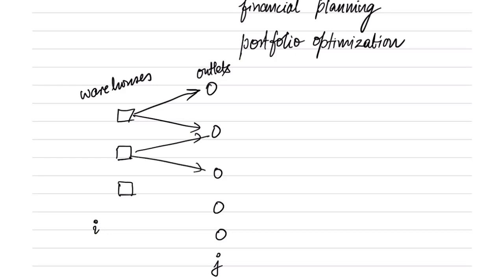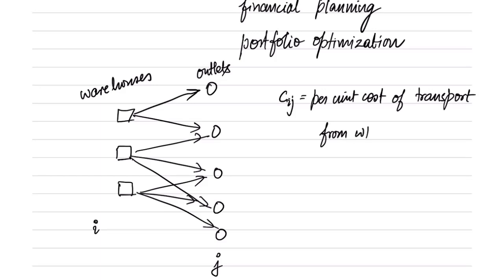Each warehouse may send to some of the outlets but not necessarily all of the outlets. Let us say that Cij is the per unit cost of transport from warehouse i to outlet j.